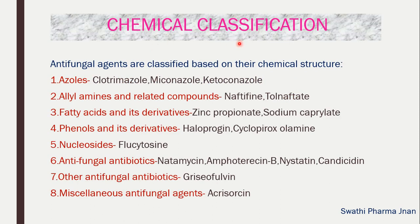Now we will see the chemical classification. This is called chemical classification because it is based on chemical structure, whereas pharmacological classification is based on mechanism of action. In medicinal chemistry, we see classification based on chemical structure. The first class is azoles — examples are clotrimazole, miconazole, and ketoconazole. The term azole indicates the drug contains imidazole as the basic nucleus.